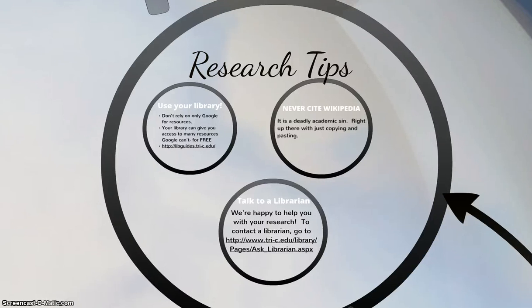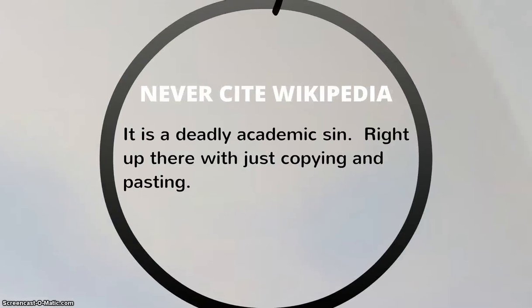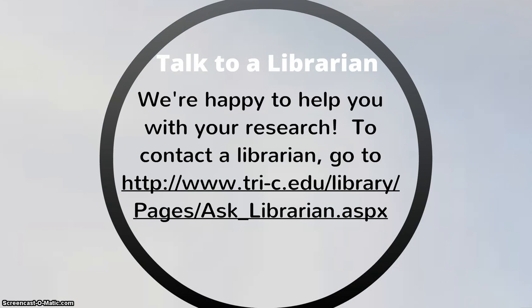Just a few more tips before we leave. One is to use your library — you don't want to rely only on Google for a research paper or project. Your library can give you access to thousands of magazines, journals, newspapers, and books, so be sure to visit the LiveGuides at Tri-C and start with whatever discipline you're in. The next tip is to never cite Wikipedia — your instructors will not be impressed if the resource you chose for your paper was Wikipedia. And the last tip is to talk to a librarian. We're happy to help you, and you can find out how to contact us by going to the link below. Good luck with your research.